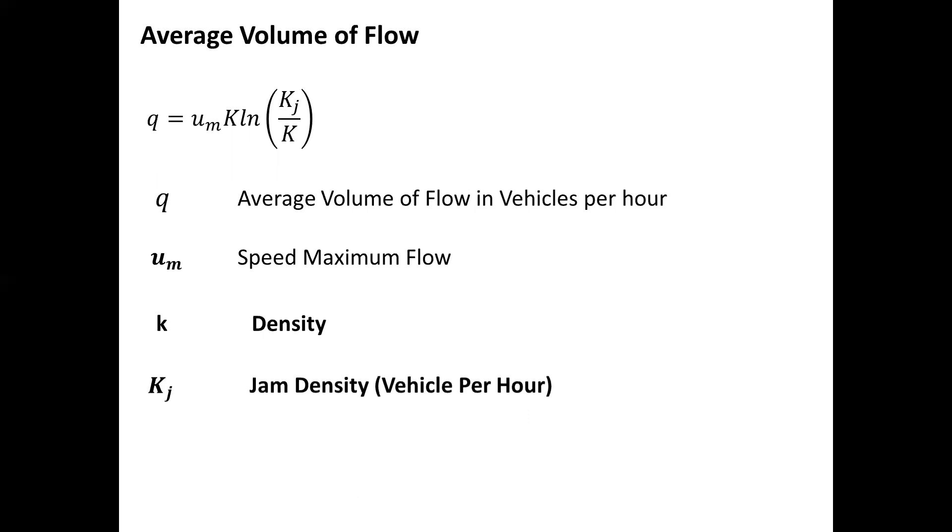For the third formula, we have the formula for the average volume of flow: Q equals U sub m times K times the natural log of K sub j over K. Q stands for the average volume of flow in vehicles per hour, U sub m is speed at maximum flow, K is the density, and K sub j is the jam density in vehicles per hour.